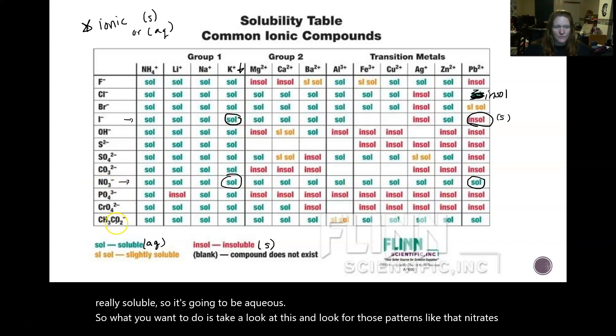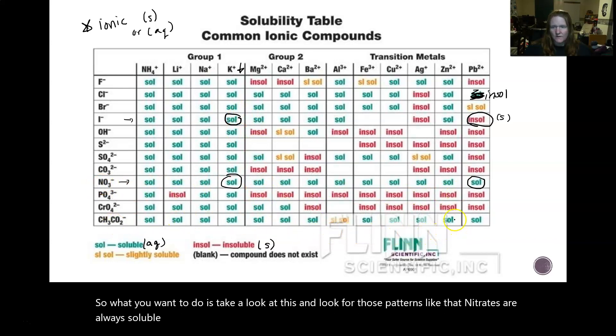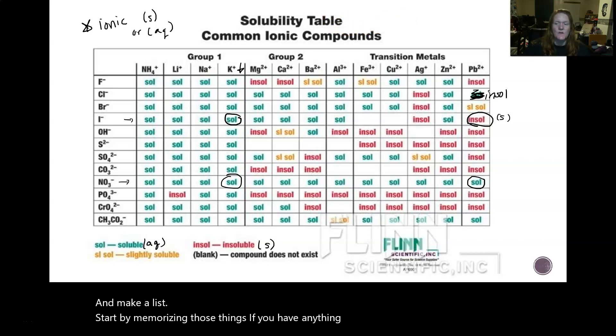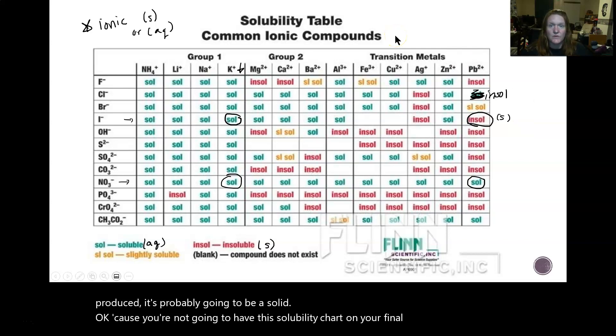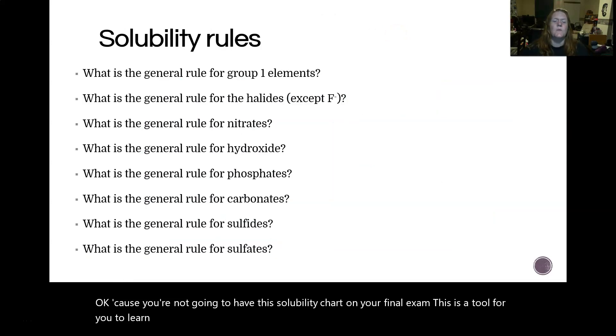So what you want to do is take a look at this and look for those patterns, like that nitrates are always soluble. Acetates are almost always soluble. Find what is always soluble, including in the groups up and down, and make a list. Start by memorizing those things. If you have anything that's not on that list that you've produced, it's probably going to be a solid. Because you're not going to have this solubility chart on your final exam. This is a tool for you to learn the patterns. But you want to kind of be going forward where you remember what dissolves, what doesn't.